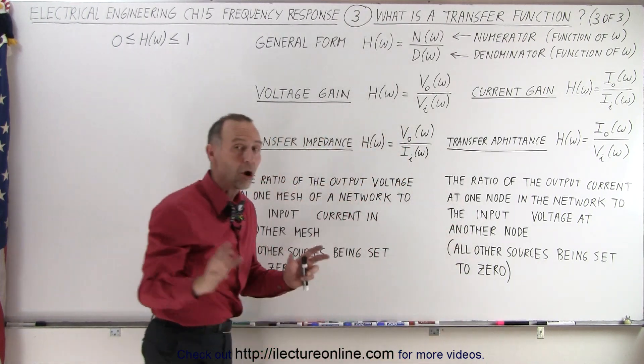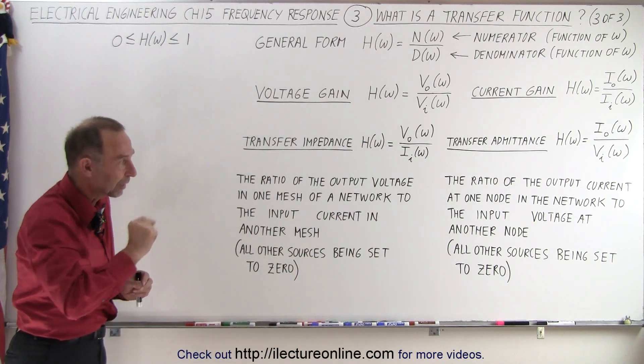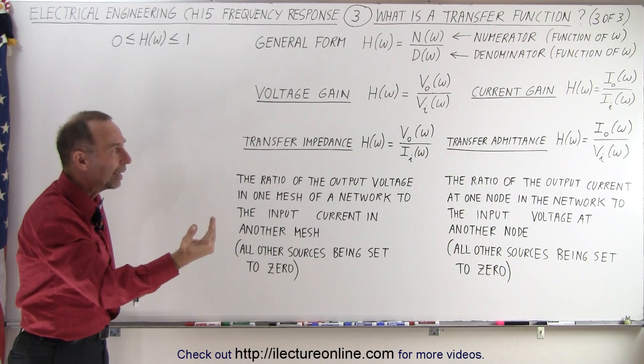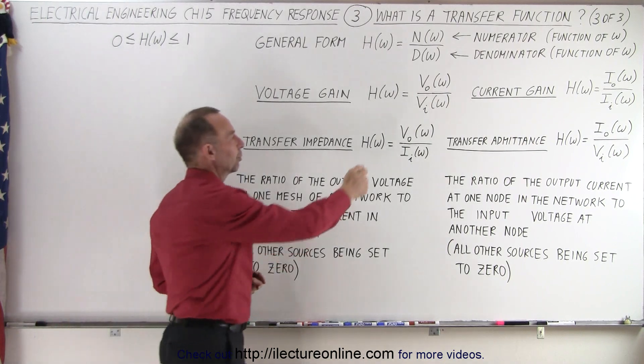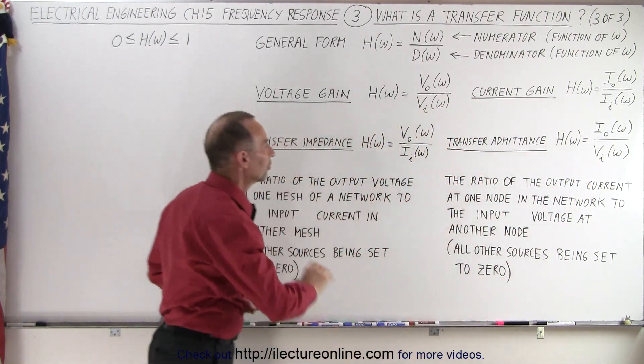Here, we have an input current driving the circuit, and we have an output voltage. Again, in both cases, all other sources are set to zero. So, we have that pure relationship between the output and the input, either the output voltage versus the input current, or the output current versus the input voltage.